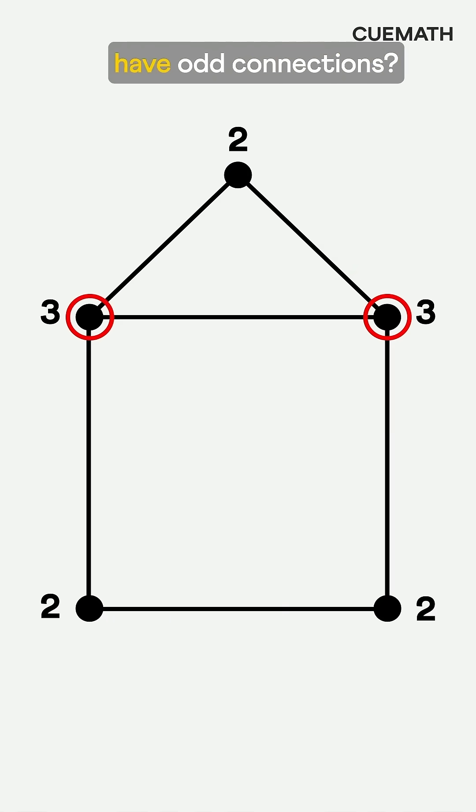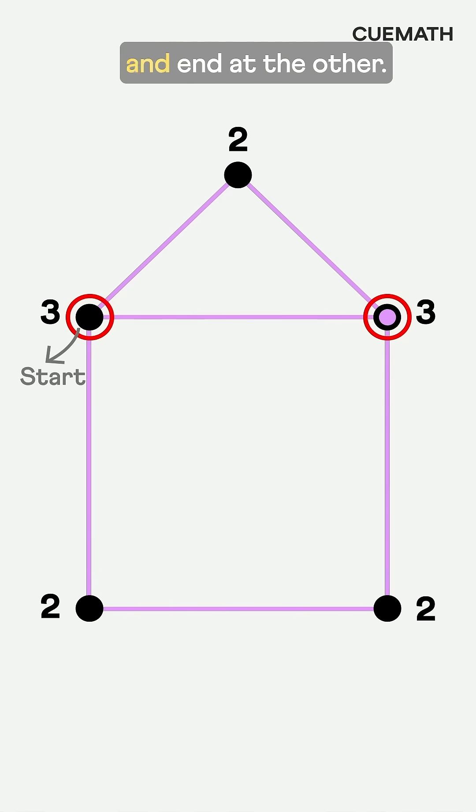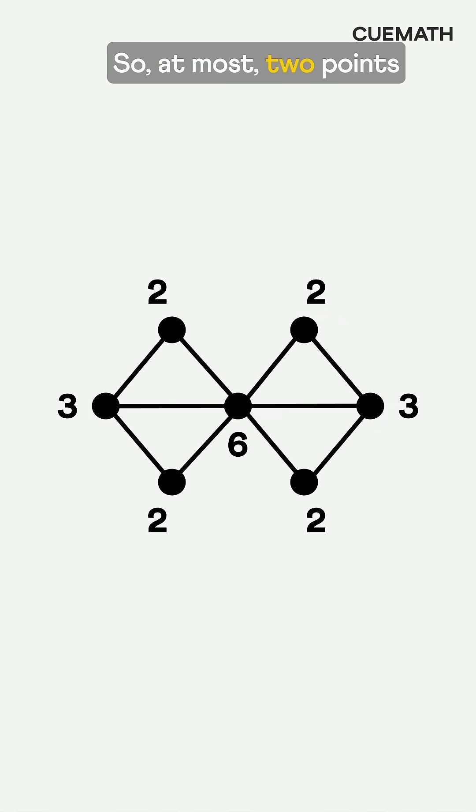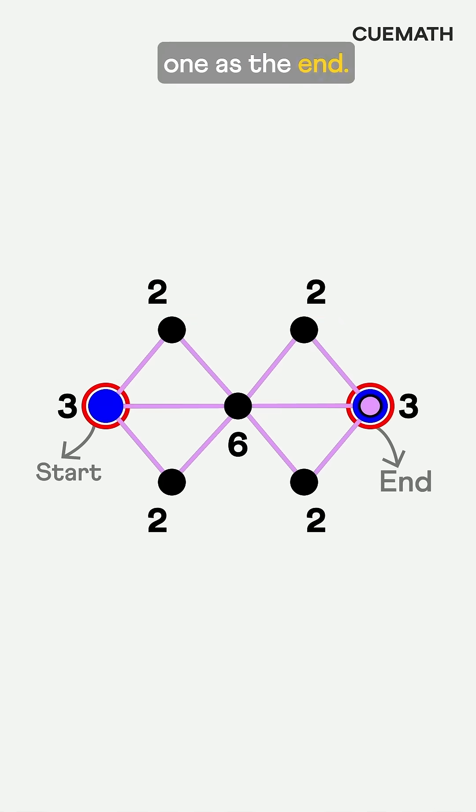What if some points have odd connections? Is it impossible to cover them? Not always. If we start from one, we can cover all lines exactly once and end at the other. So at most, two points can have an odd number of connections. One is the start, one is the end.